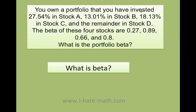You own a portfolio that you have invested 27.54% in stock A, 13.01% in stock B, 18.13% in stock C, and the remainder in stock D. If you have the beta of these four stocks, which are 0.27, 0.89, 0.66, and 0.8, what is the portfolio beta?